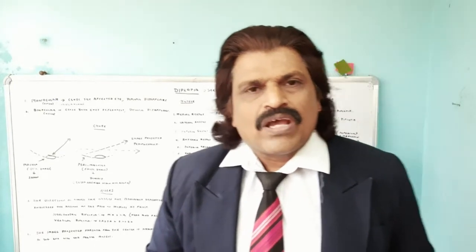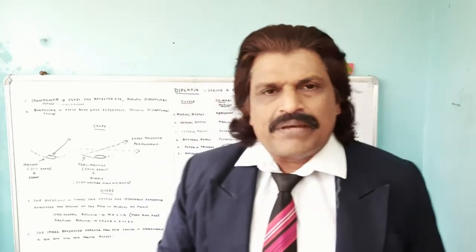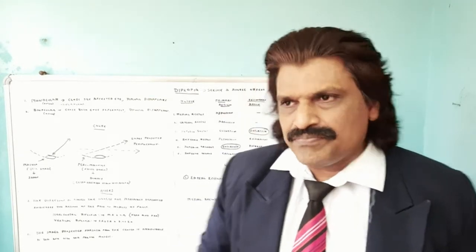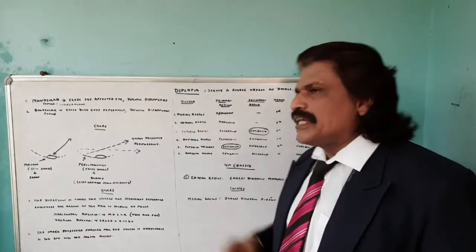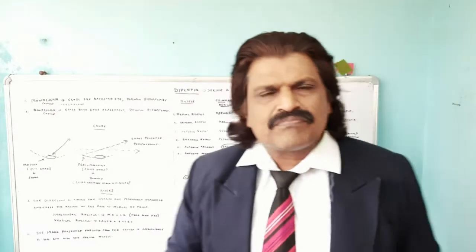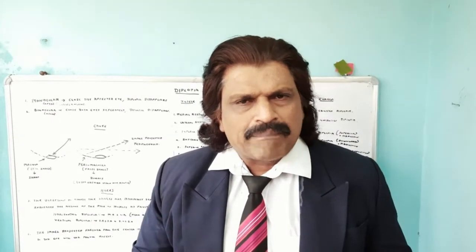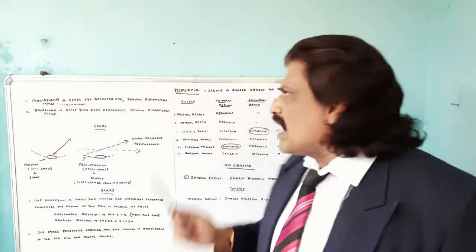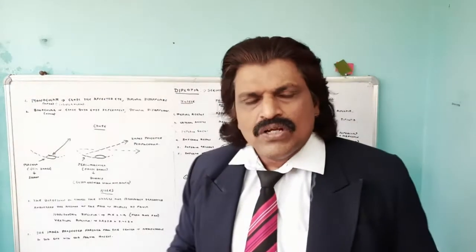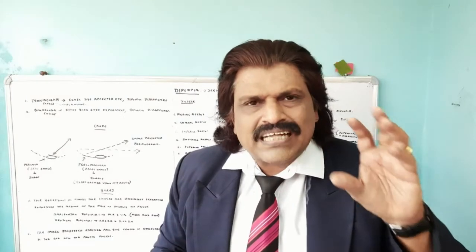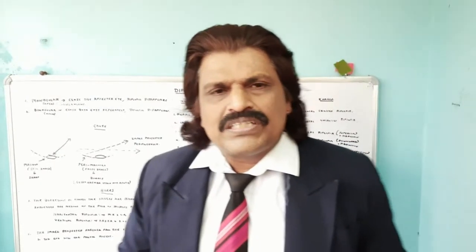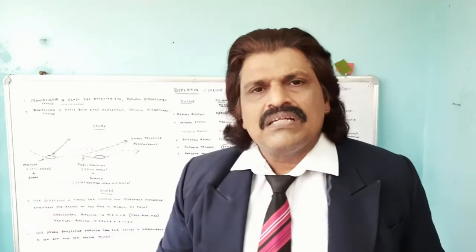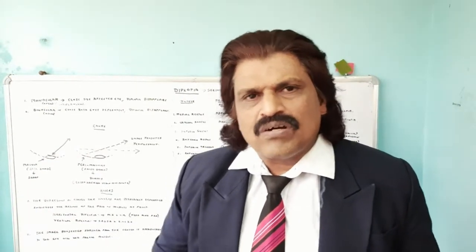Today we will talk about an interesting topic: diplopia, double vision. What is this double vision and diplopia? It is nothing but seeing a single object as double. So if you see a single object as double, we call that as double vision or diplopia.